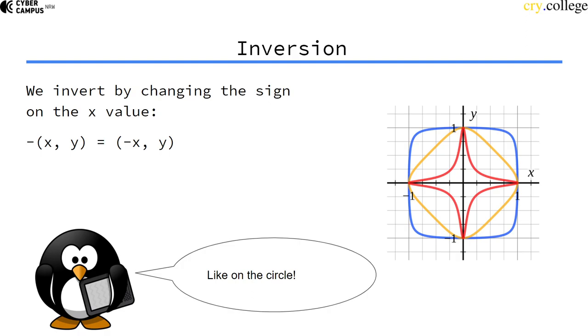How do we invert? In contrast to Weierstrass curves, we invert by changing the sign on the x value instead of the y value, just like we did on the circle.